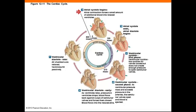The last portion of the cardiac cycle is ventricular diastole, which has two phases. In early diastole, the semilunar valves close and the AV valve is still closed. Once ventricular pressure drops below atrial pressure, the AV valves open. In late ventricular diastole, passive ventricular filling occurs.